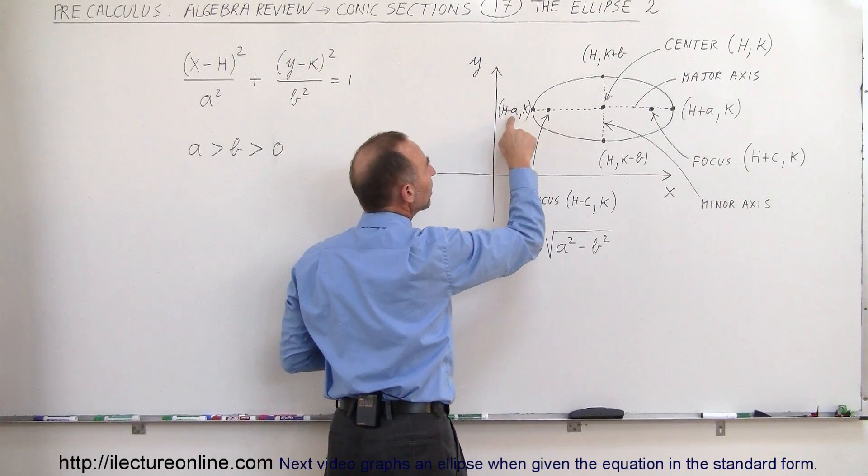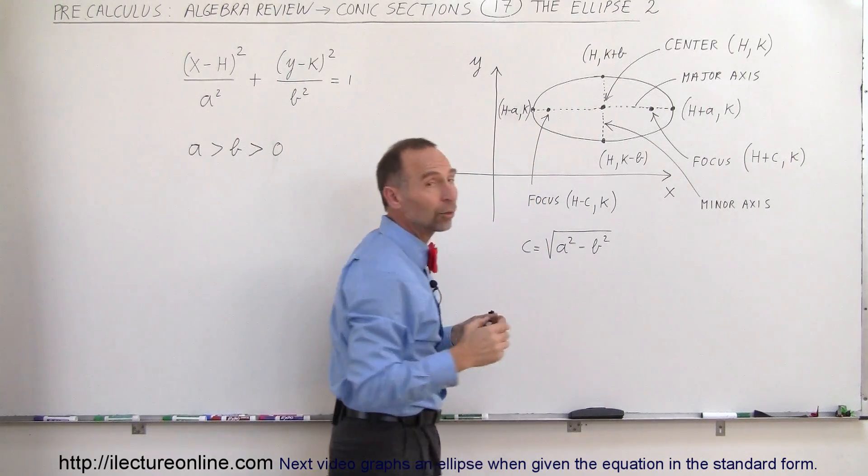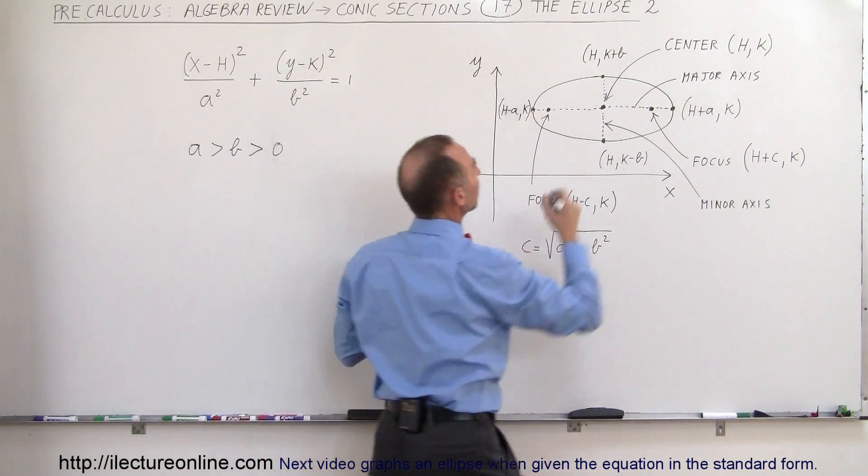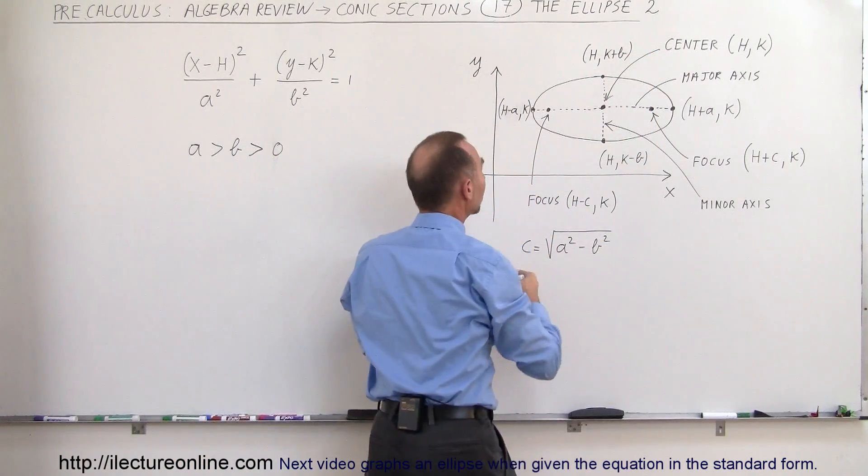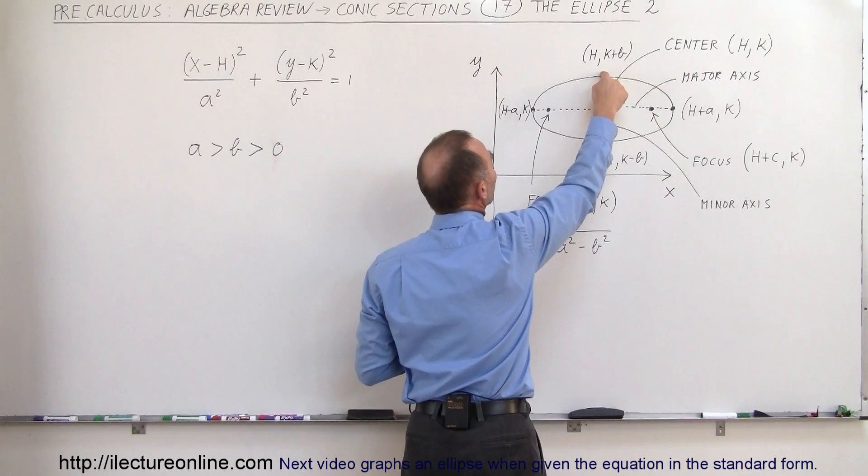Here, the vertex is (h-a, k), with k being the y coordinate of that vertex. And here I'm missing a parenthesis right there.